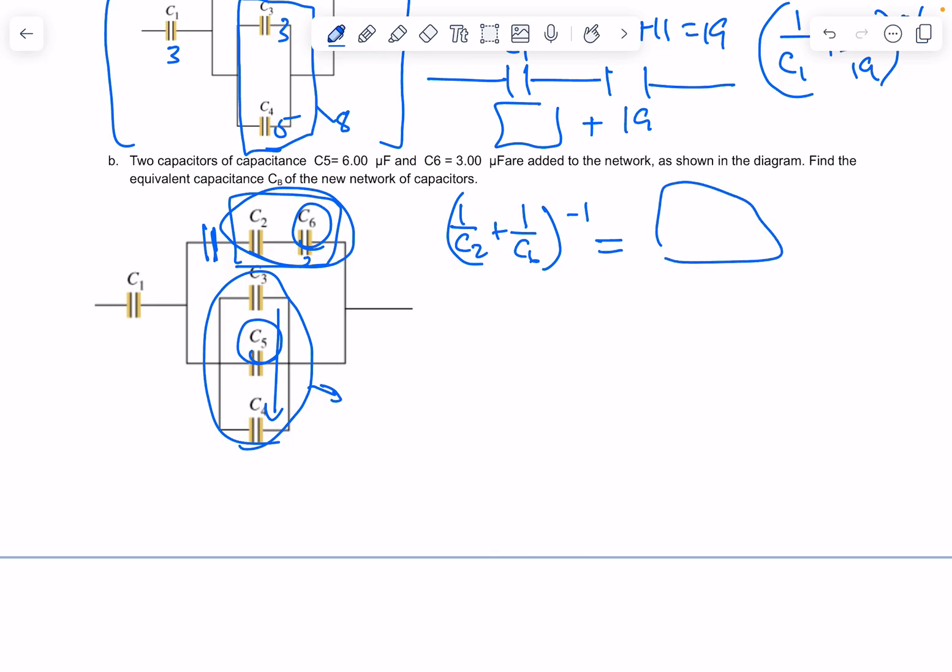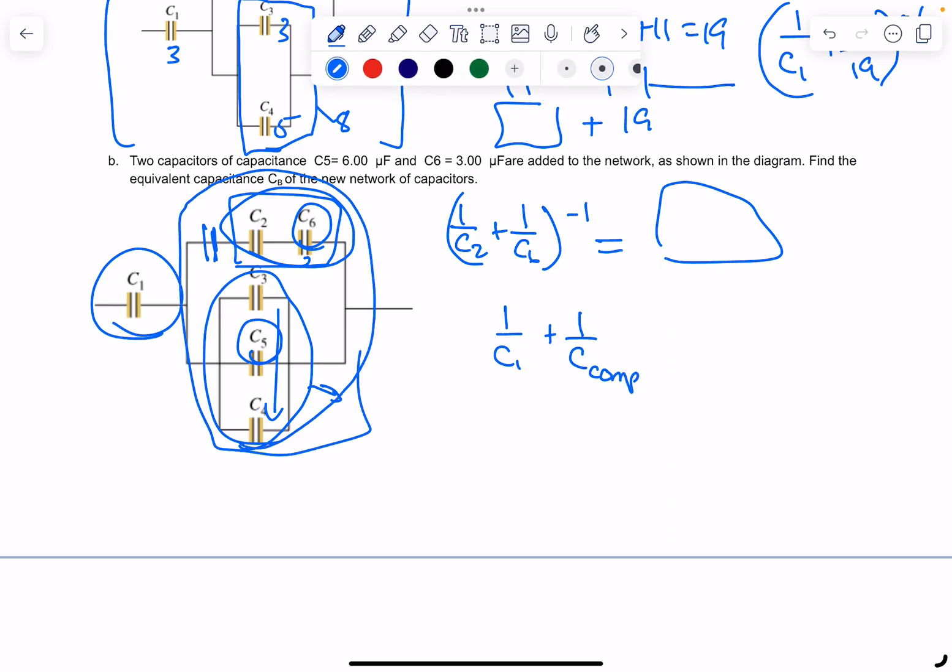You'll add those, and then whatever that all comes down to, you'll have 1 over C1 plus 1 over C complex. This whole thing is the complex one. You're going to want to find what that whole adds up to, all that to the negative first.